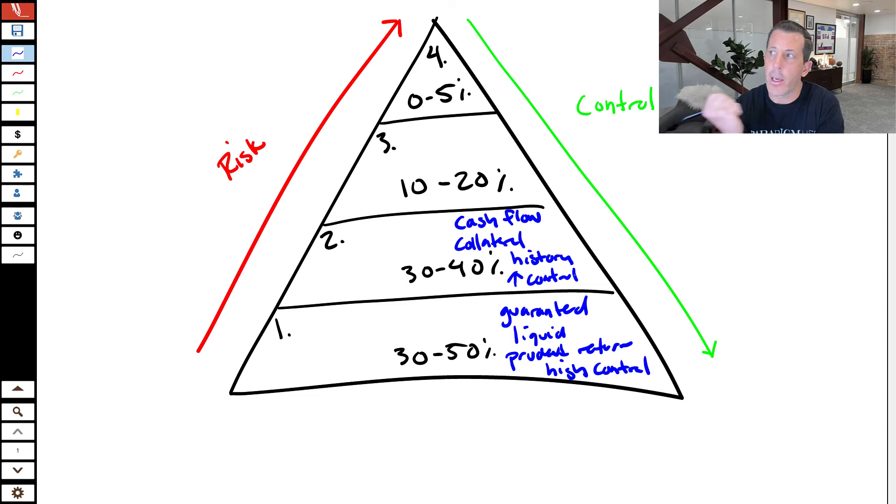When you start getting beyond tier two, this is where there's a lot more risk. So here I'll use this space here. There's no guarantees, which means you could lose all of your money. There's limited collateral and little control.